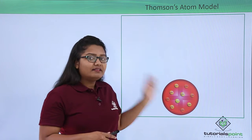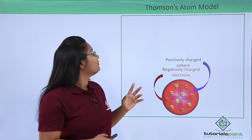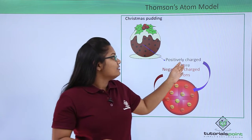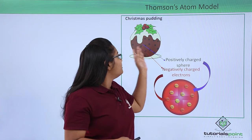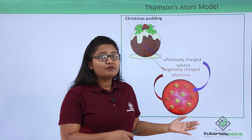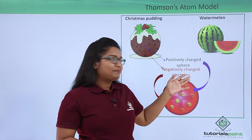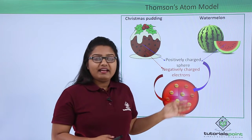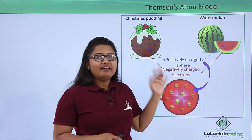We can visualize this atomic structure by comparing it with a spherical Christmas pudding, where the spherical body of the pudding can be visualized as the positively charged sphere, and the dry fruits in the body of the pudding can be thought of as the negatively charged particles. Similarly, we can also compare it with a watermelon piece, where the red edible part is the positively charged sphere, and the seeds in the body of the watermelon can be thought of as the negatively charged electrons.